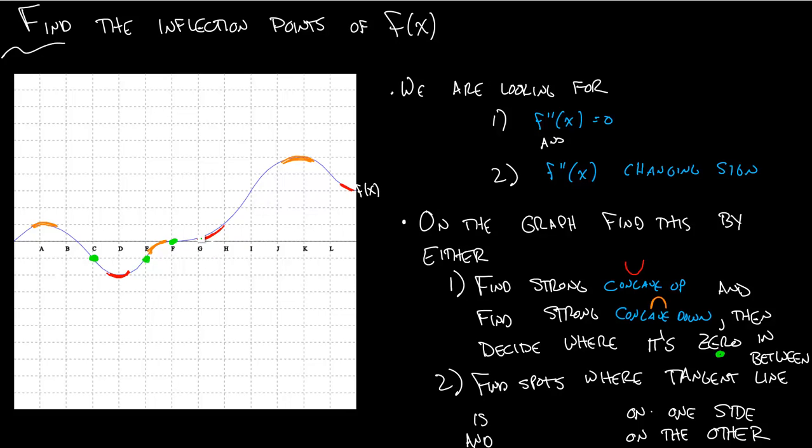And then finally, the last two goes from up to down. It needs to happen somewhere. Let's say it happens at I. And then it needs to go from down to up. It needs to happen somewhere. Let's say it's at J.